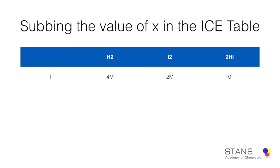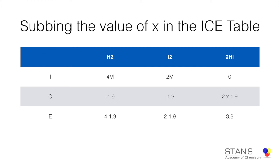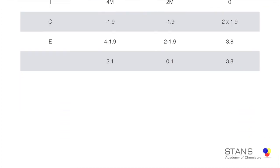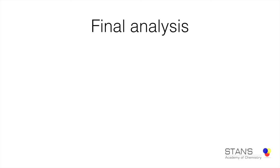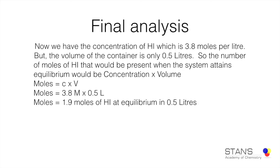The initial concentrations remain 4 M, 2 M, and 0. The change in concentration is 1.9 for hydrogen, 1.9 for iodine, and 2 × 1.9 = 3.8 for hydrogen iodide. Therefore, at equilibrium: 2.1 moles per liter of hydrogen remain, 0.1 moles per liter of iodine remain, and there are 3.8 moles per liter of hydrogen iodide in the equilibrium mixture.